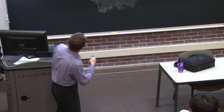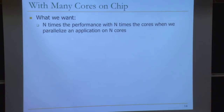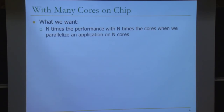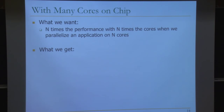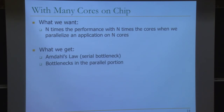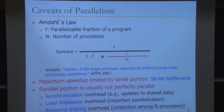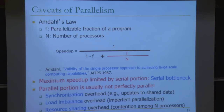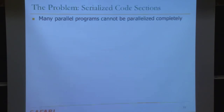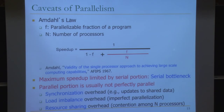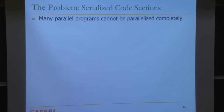We want n times the performance with n times the cores — linear scaling as in Amdahl's law. But what we get today is Amdahl's law: we have a serial bottleneck and bottlenecks in the parallel portion — synchronization overhead, load imbalance overhead, and resource sharing overhead. These are not taken into account in Amdahl's law but also limit performance. Serial bottleneck limits your parallelism, and these also waste energy — once serialized, lots of processors are just waiting for others.